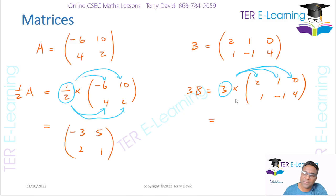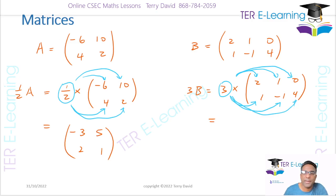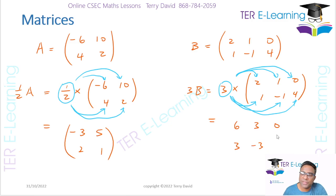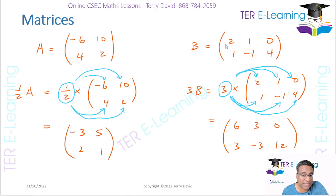So I take 3 and multiply by each element: 3×2 = 6, 3×1 = 3, 3×0 = 0, 3×1 = 3, 3×(-1) = -3, and 3×4 = 12. The result is [6, 3, 0; 3, -3, 12]. As you can see, you can apply scalar multiplication to basically any matrix — we're not concerned about the order of the matrix.